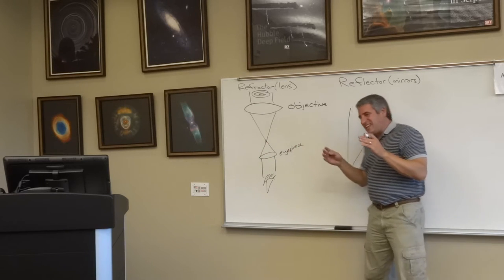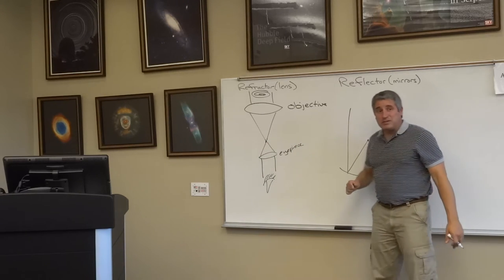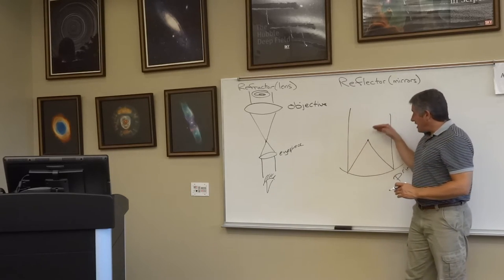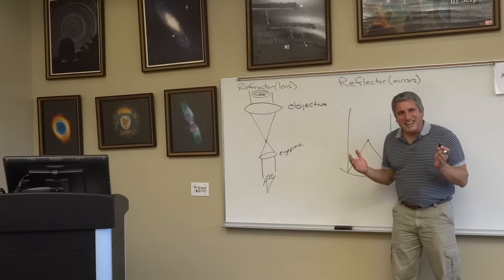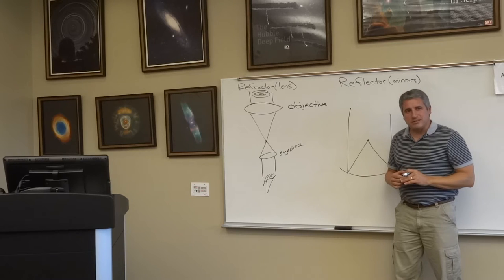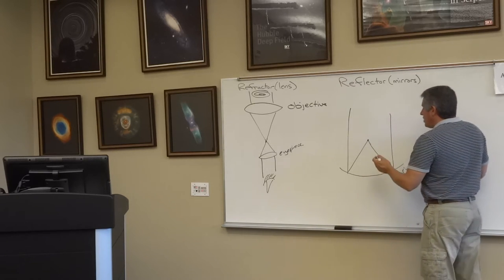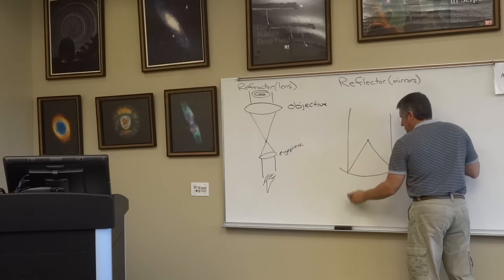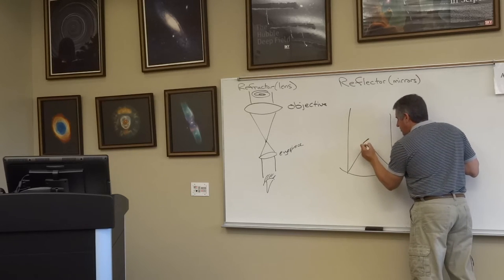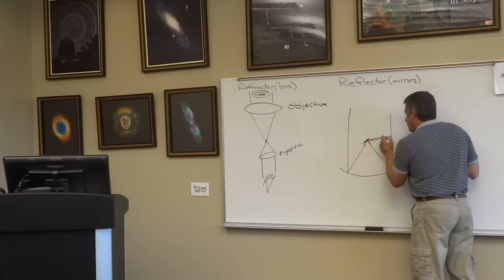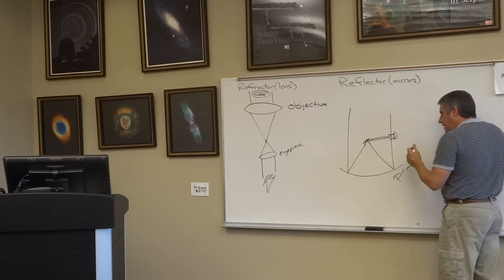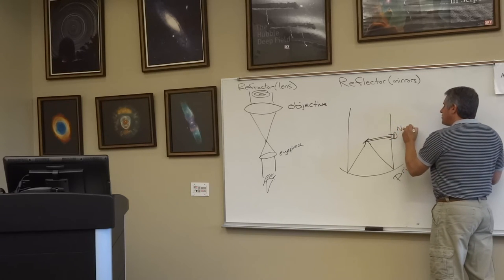So instead, we've got to let the light do something else so we can get a handle on it. We've got another problem here, too, because this is a mirror. If we were to try to look at this, we'd have to stick our head in front of the mirror, we'd block the light. So astronomers recognized that they had to take the light and put it somewhere else. Isaac Newton designed a telescope where he took a secondary mirror and placed it right here, a small secondary mirror. The light reflects off the secondary mirror out the side of the telescope where you put an eyepiece to clean it up, and you've got yourself what's called a Newtonian reflector.